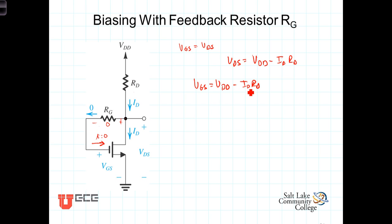As I-sub-D gets bigger, VGS gets smaller. As I-sub-D gets smaller, VGS gets larger.